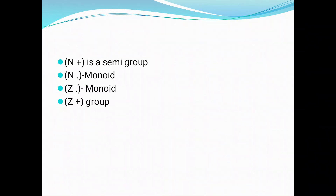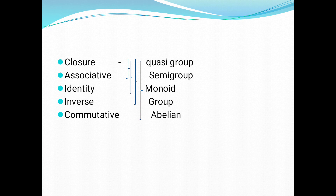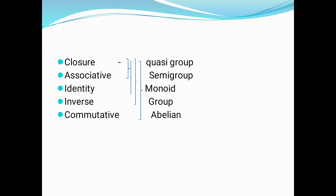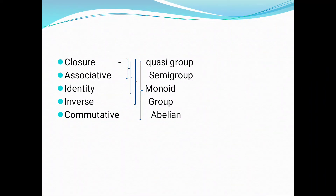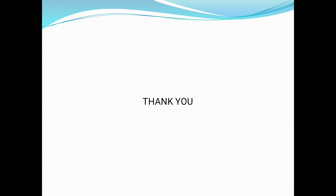As we have already seen, (Z, +) is a group. To summarize: if only closure is satisfied, it is called a quasi-group. If closure and associative are satisfied, it is a semi-group. If closure, associative, and identity are satisfied, it is a monoid. If closure, associative, identity, and inverse are all satisfied, it is a group. If all five conditions including commutativity are satisfied, it is called an abelian group. Thank you, students.